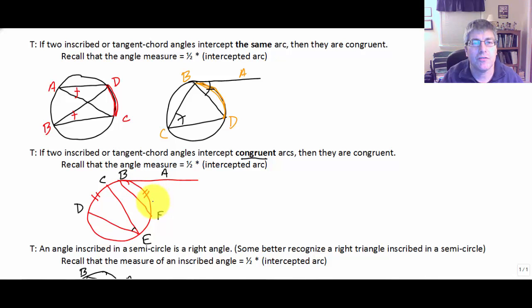We're intercepting different set of points, different arcs, but those arcs are congruent. And since our formula for each of the angles is the same, then it would be logical that because they intercept congruent arcs, that those angles would be congruent.